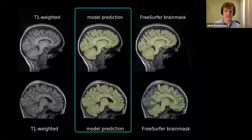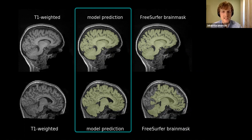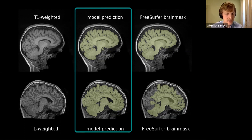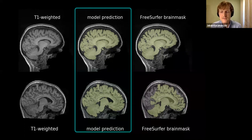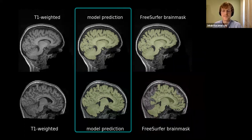Another model we distribute is a brain extraction model — another segmentation model that finds the brain in space. The inputs are T1-weighted images. The model prediction overlaps quite well with the FreeSurfer brain mask. On the bottom row, there was subject motion causing striations that look like an onion — that's a motion artifact. FreeSurfer failed on that segmentation and missed a lot of the brain, but the model did decently well despite being slightly off in some areas.